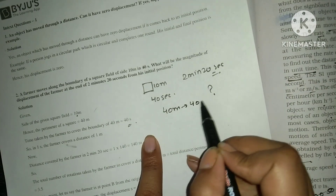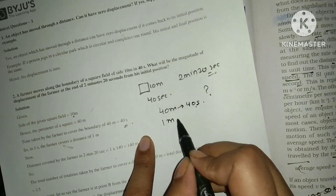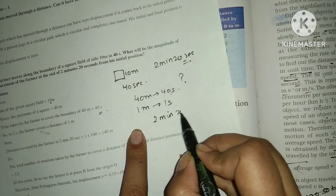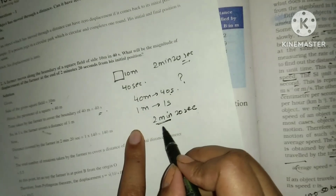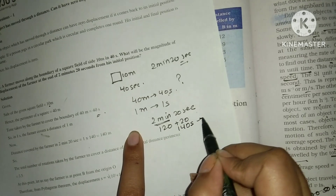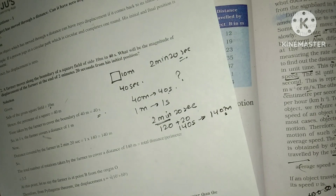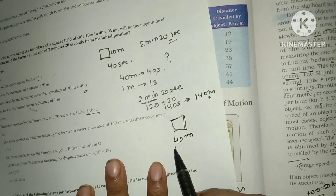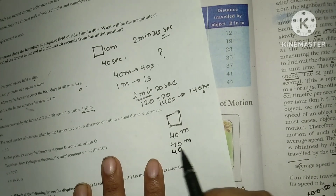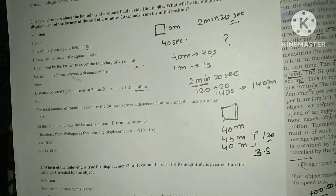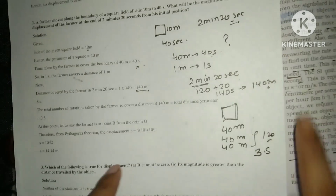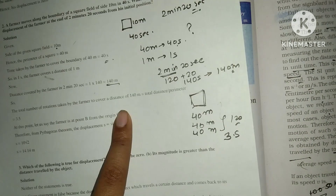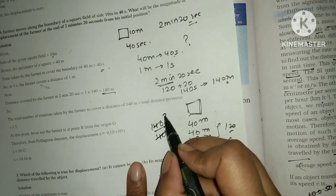The farmer covers 40 meters in 40 seconds, so 1 meter per second. In 2 minutes 20 seconds, that is 140 seconds, the farmer covers 140 meters. Total rotations: 140 divided by 40 gives 3.5 rounds. So the farmer completes 3 full rounds and half a round, ending at point B, the midpoint of one side.